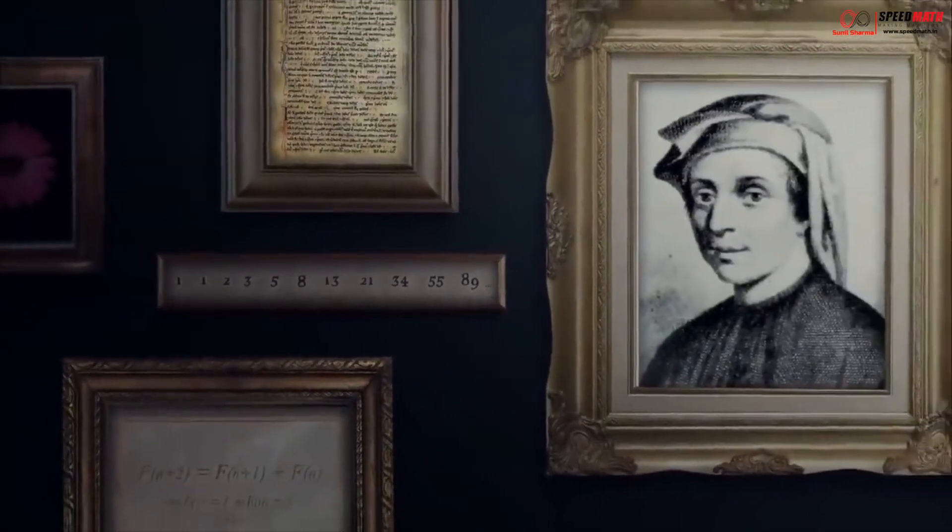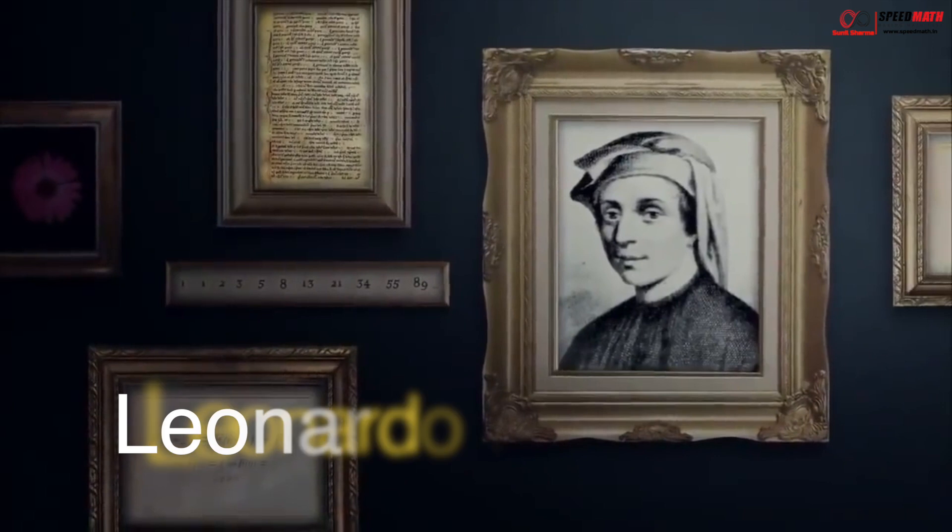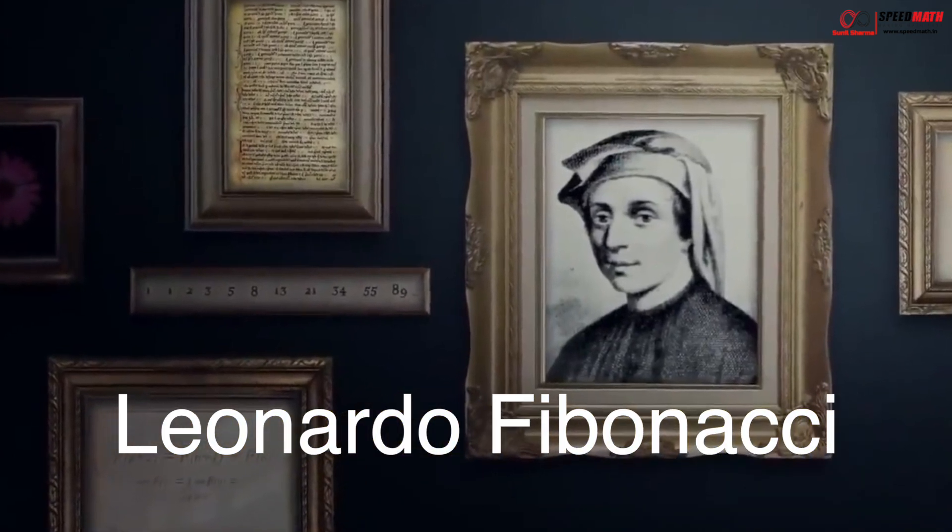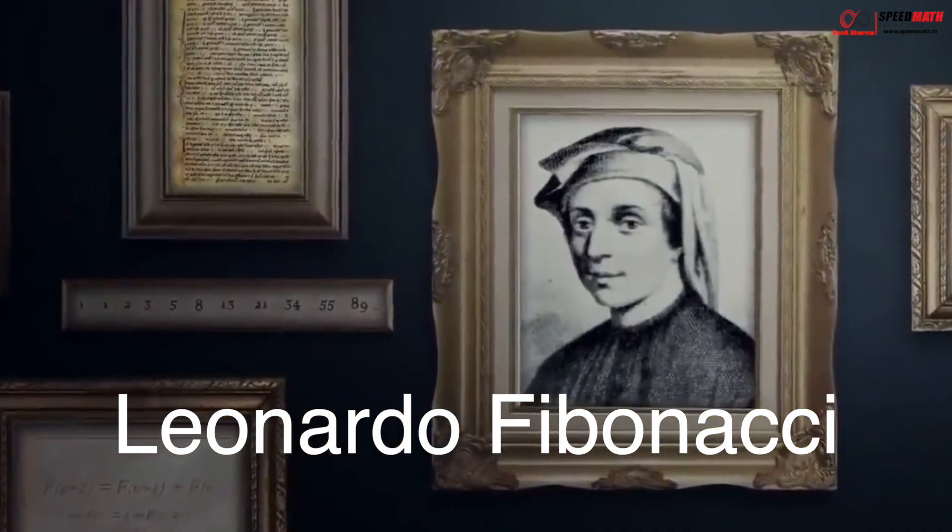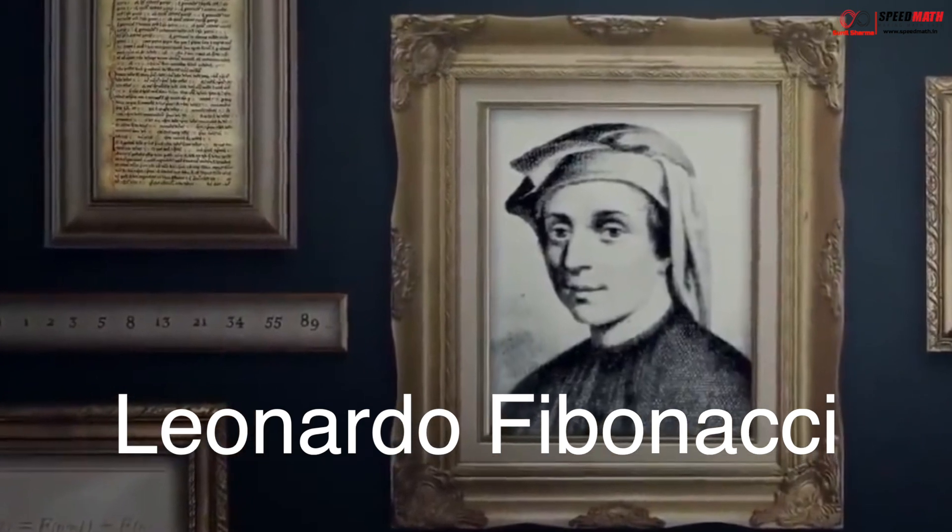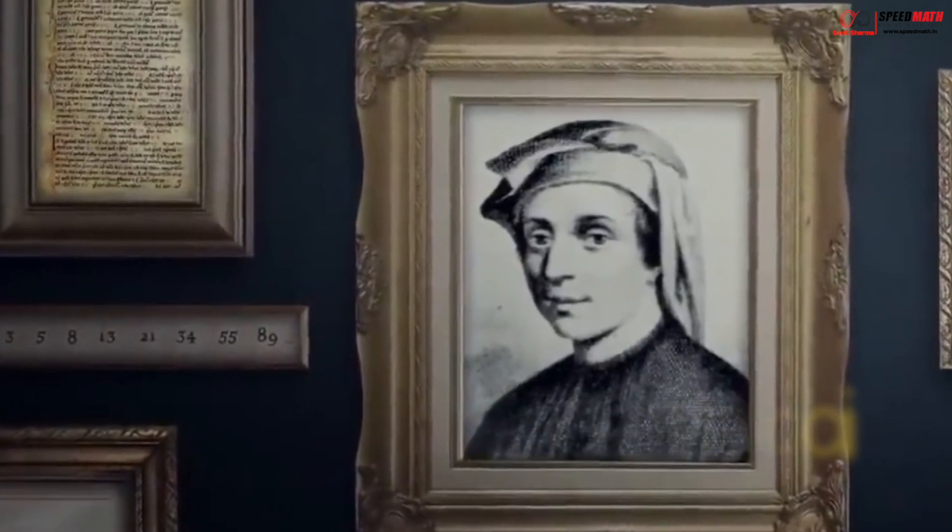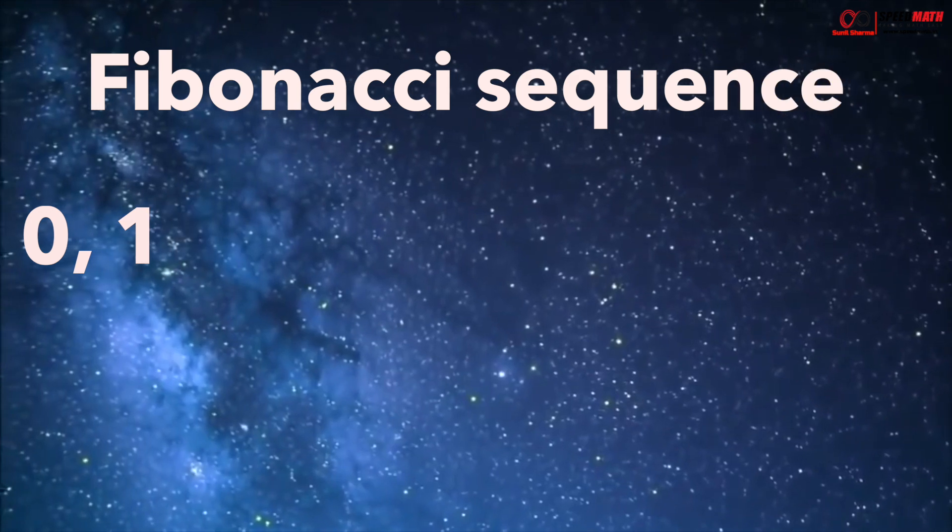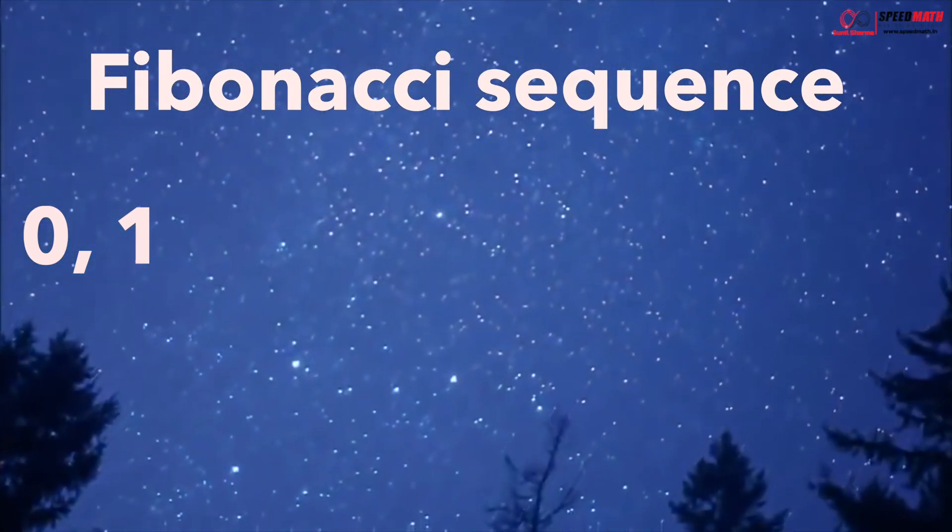One such example is Fibonacci sequence discovered by Leonardo Fibonacci. While recording patterns in the breeding of rabbits, 12th century Italian mathematician Leonardo Fibonacci was the first man to observe what is now known as Fibonacci sequence, which is a series of numbers inscribed throughout our world.